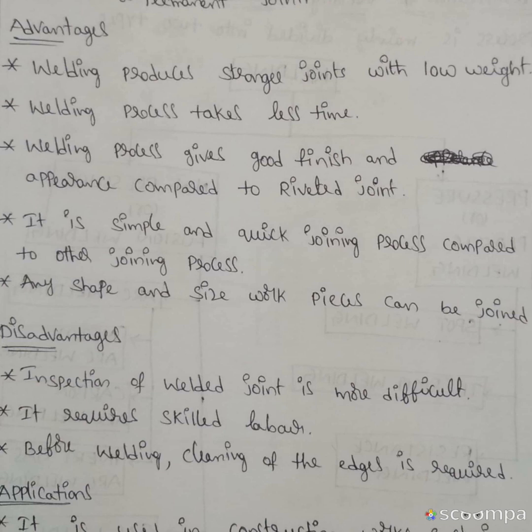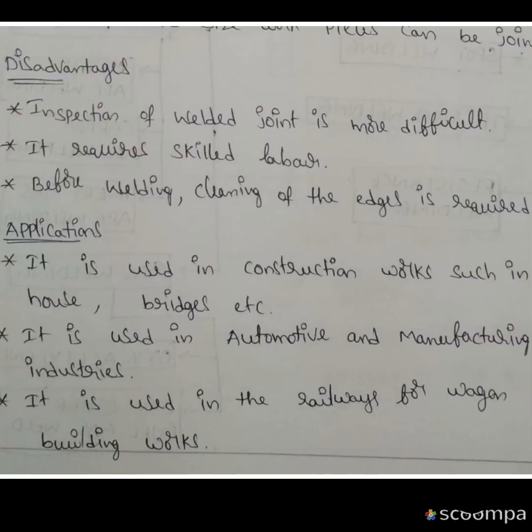Any shape or size of work pieces can be joined by welding. These are the advantages. Disadvantages: Inspection of the welding joint is more difficult. It requires skilled labor — normal labor cannot do the welding. Before welding, cleaning of the edges is required.